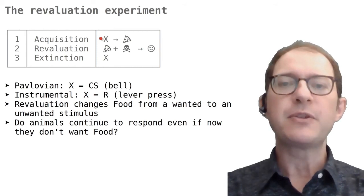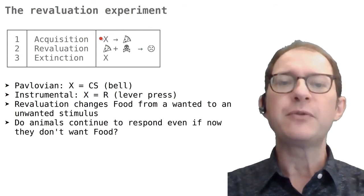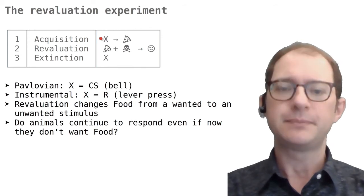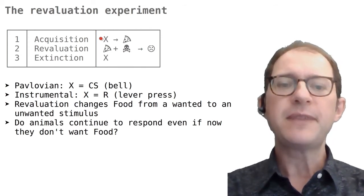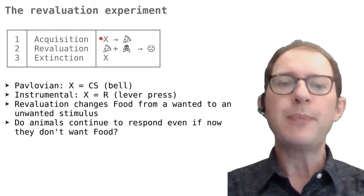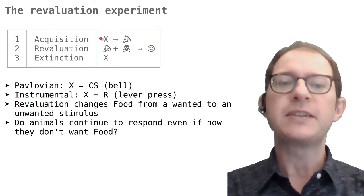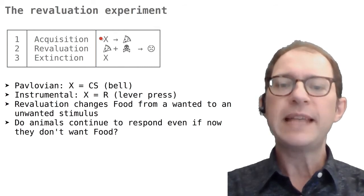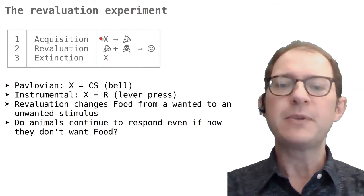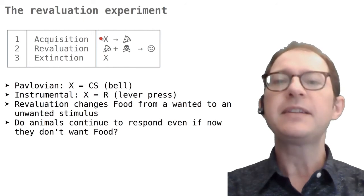This second phase is called the revaluation phase because its goal is to change the value of the food in the eyes of the animal, turning it from yummy to yucky. It is important that in this phase the Pavlovian stimulus or the instrumental action are not present — no bell for Pavlov's dog and no lever to press for Skinner's rat. What we are testing is whether the animal can understand that the stimulus or action now leads to something bad rather than something good.